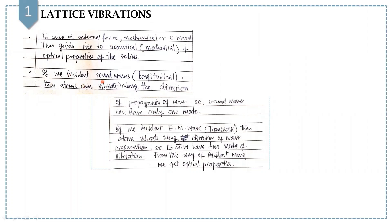If we incident sound waves, those are types of longitudinal waves, and then atoms can vibrate along their direction — so sound waves can have only one mode. And if we incident electromagnetic waves, which are transverse in nature, then atoms vibrate along the direction of wave propagation, so electromagnetic waves have two modes of vibration. From this way of incident wave, we get optical properties.